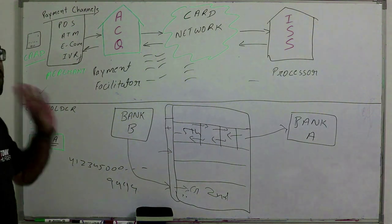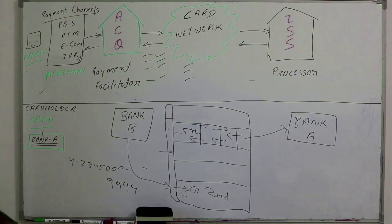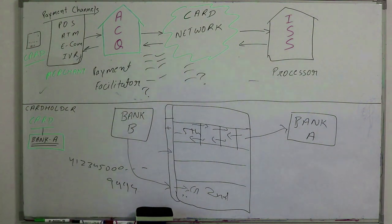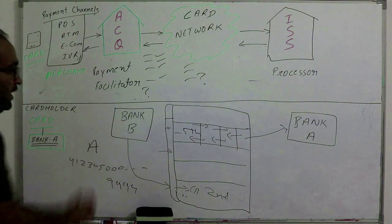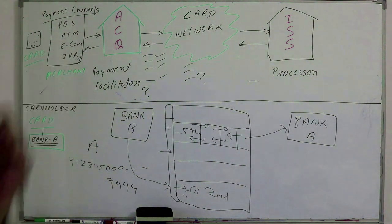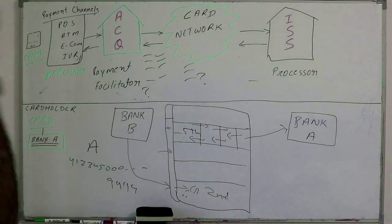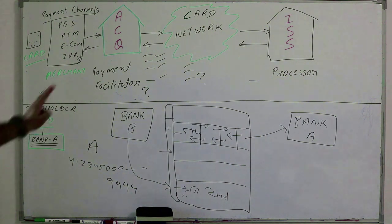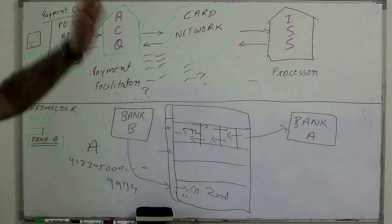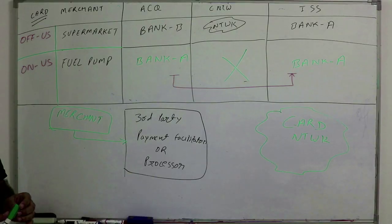Whether on an e-commerce website, ATM, or point of sale - these are standard rules that happen. Now the question is: in this scenario we're assuming your card's 16-digit number does not belong to Bank B - it belongs to a different bank. So why do you need a card network? Why do you need an acquirer if both the merchant and the card belong to Bank A? I'll cover this, but first understand: Bank A and Bank B are two different entities, two different financial institutions. One bank is providing acquiring services as a payment facilitator, and the other bank is providing card issuance services.